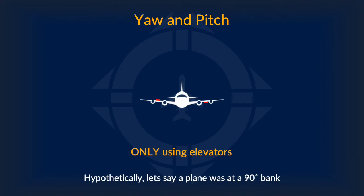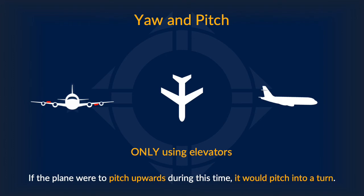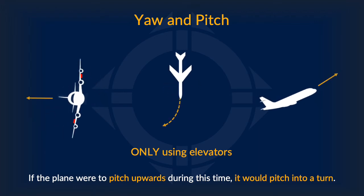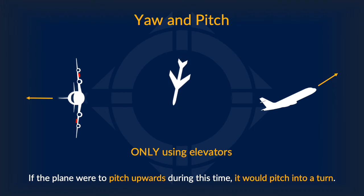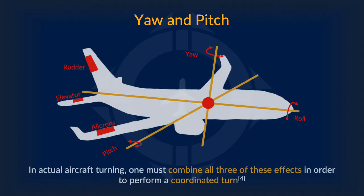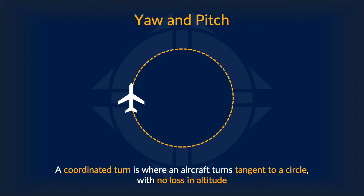Now let's examine the second scenario: only using the elevators. Let's say the airplane was at a 90-degree angle bank — which, as you may have guessed, is not possible, but just stick with me. If the airplane were to pitch upwards while at a 90-degree bank, it would pitch into a turn. In actual aircraft turning, one must combine all three of these effects to perform a coordinated turn. A coordinated turn is where an aircraft turns tangent to a circle with no loss in altitude.